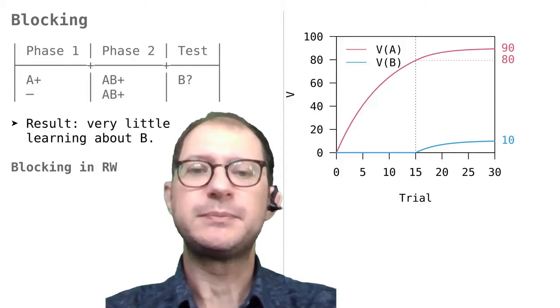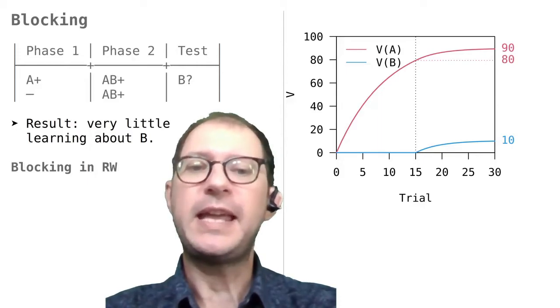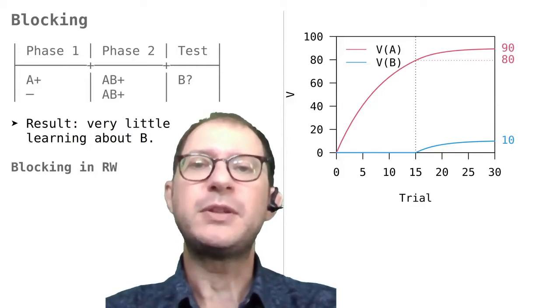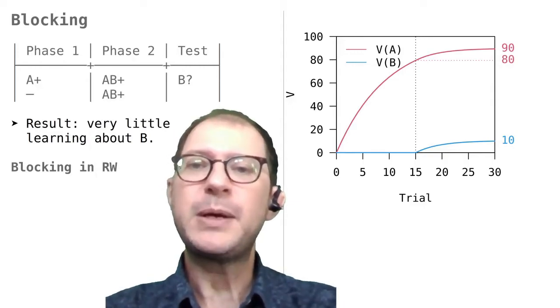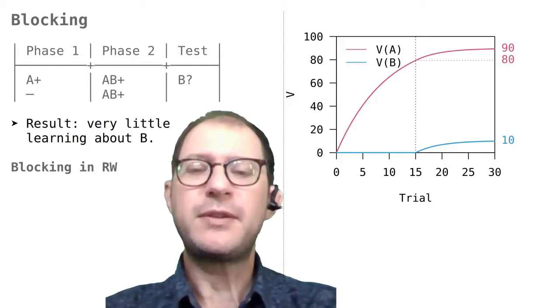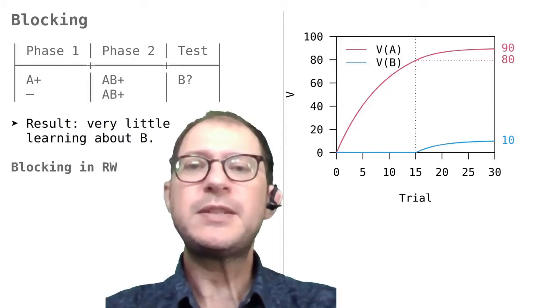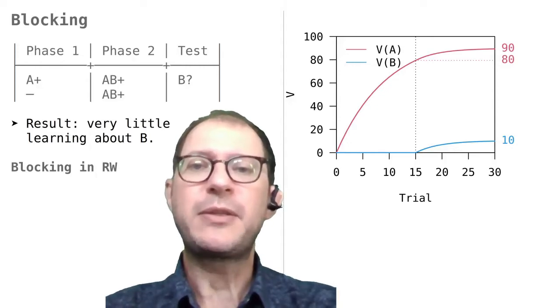Starting at trial 15, B is added. At this point, however, V(A) is already 80, so that the error left is only 20. We can see that after trial 15, there is as much learning about B as about A, so there is no learning disadvantage intrinsic to B. But because the error is only 20 at this point, B ends up with an associative strength of only 10, while A ends up with an associative strength of 90. So at the end of the experiment, the animal is predicted to respond strongly to A, but not to B.